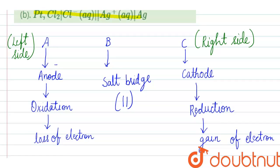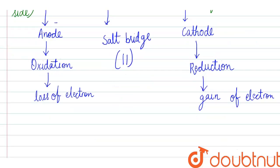So students, our cell reaction has three parts: A, B, and C. A is anode on the left side — anode means oxidation, oxidation means loss of electrons. B is the salt bridge, indicated by a double line. C is cathode — cathode means reduction, reduction means gain of electrons — and this is our right side.